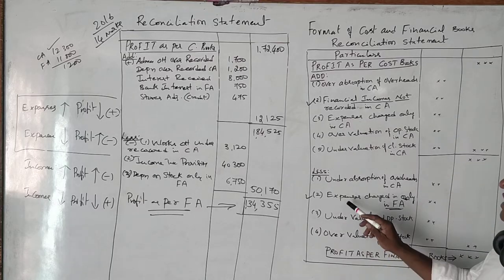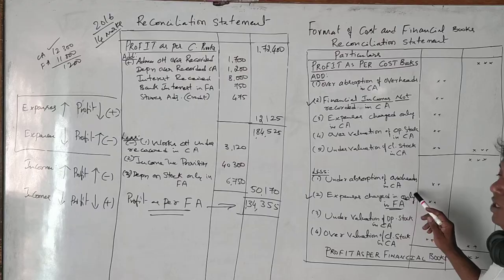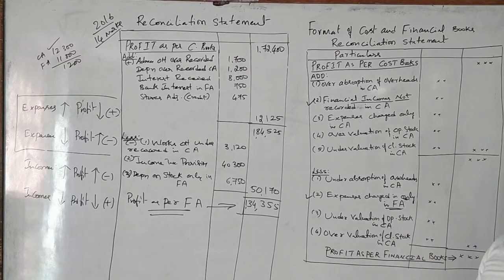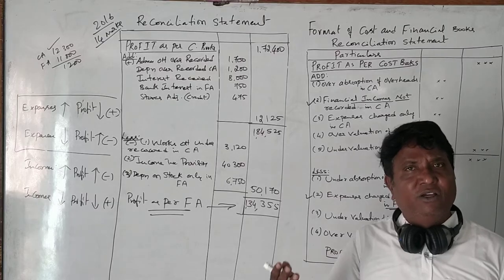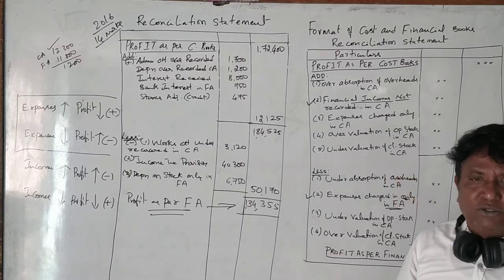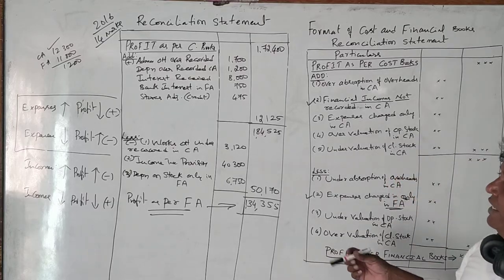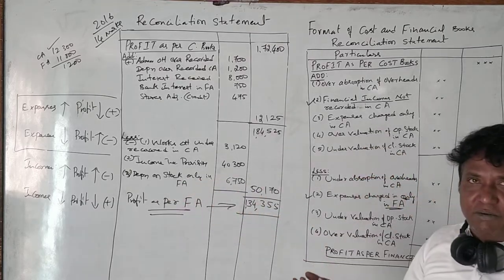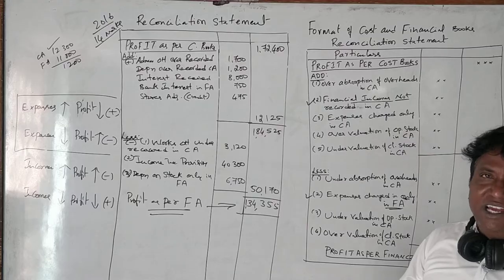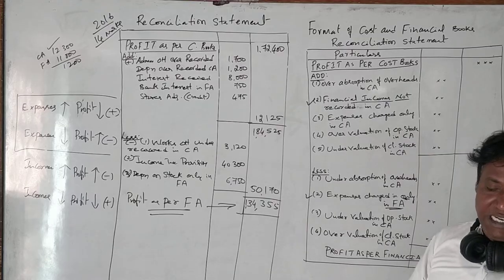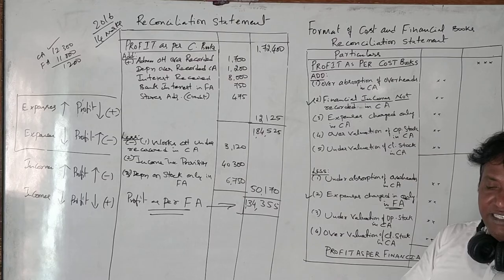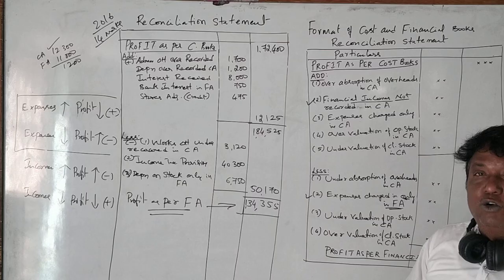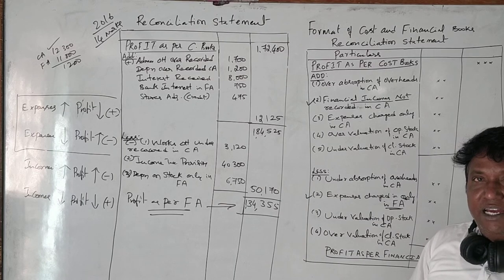Expenses only in financial accounts are adjusted equally. Opening and closing stock valuation and depreciation of stock are considered. This is the final answer, and all 14 marks should be correct.